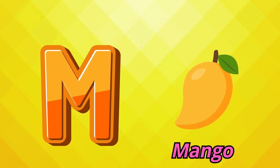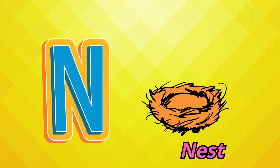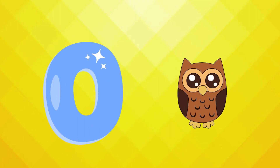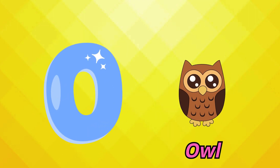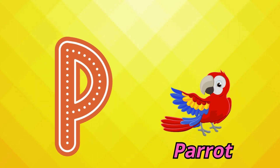M is for mango, m-m-mango. N is for nest, n-n-nest. O is for owl, ow-ow-owl. P is for parrot, p-p-parrot. Dum-dee-da-dum-dee-dum.